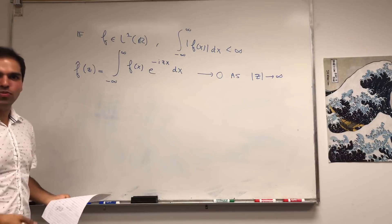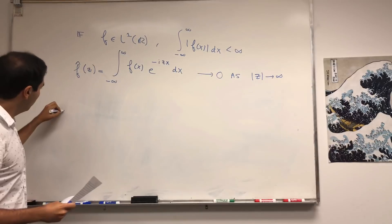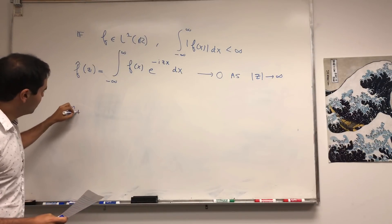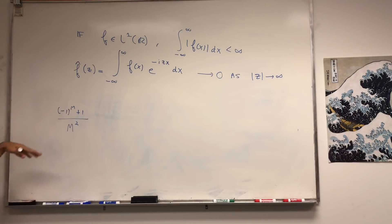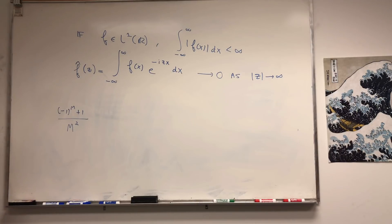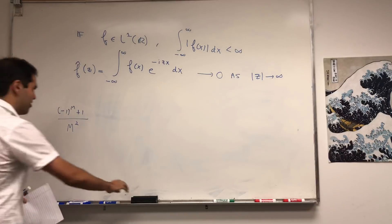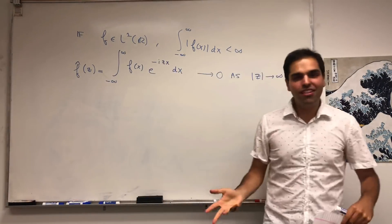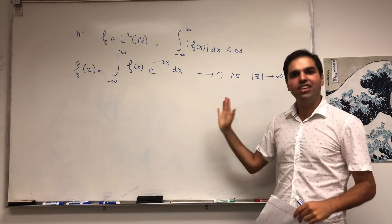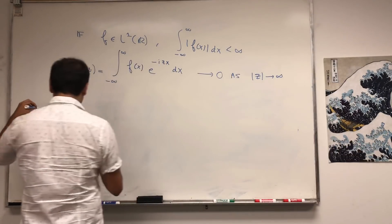It also explains why when you calculate Fourier series, you find that the coefficients look like something over n or something over n squared, and as n goes to infinity, this goes to zero. This is the continuous analog of that. It's not the statement of the theorem that's important — it's actually the proof, because it's a very classical argument. So let me prove this now.